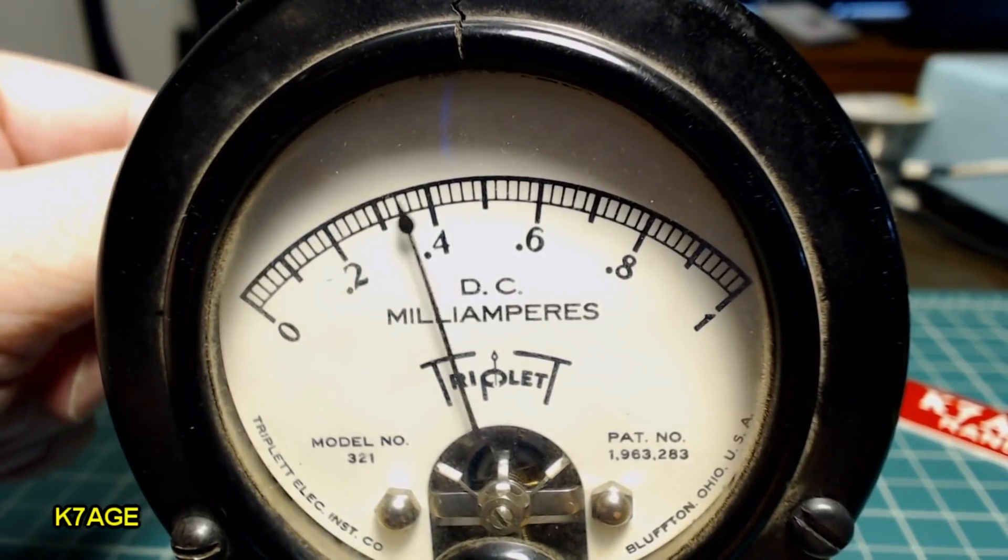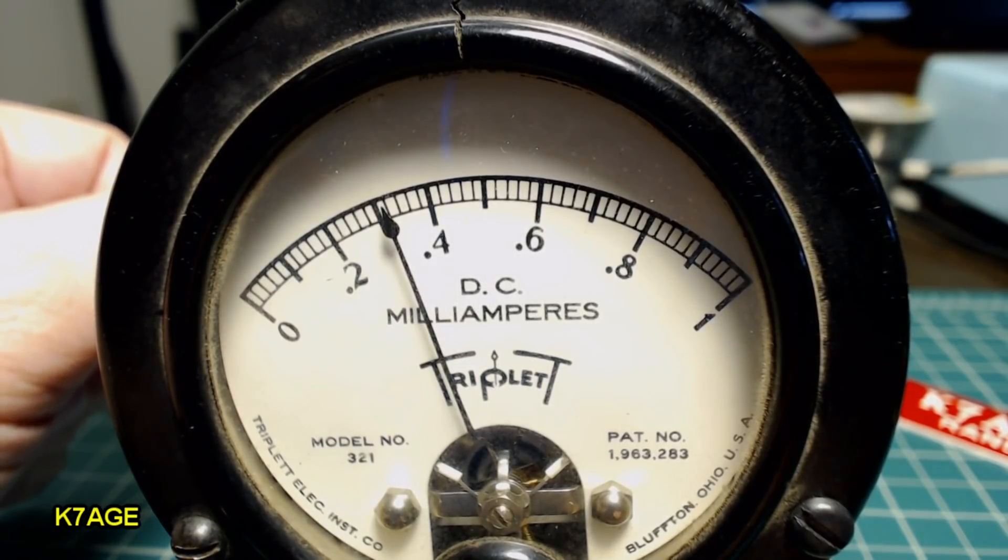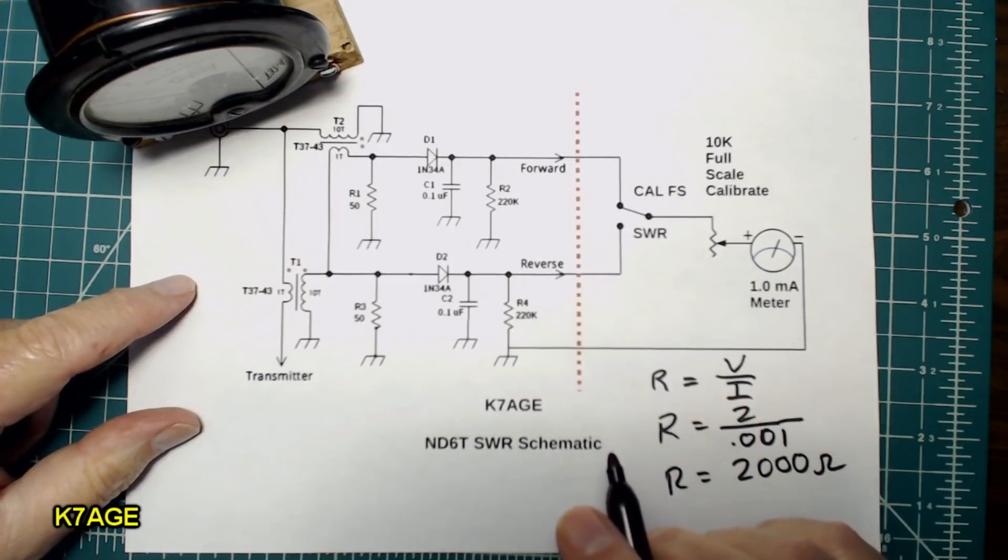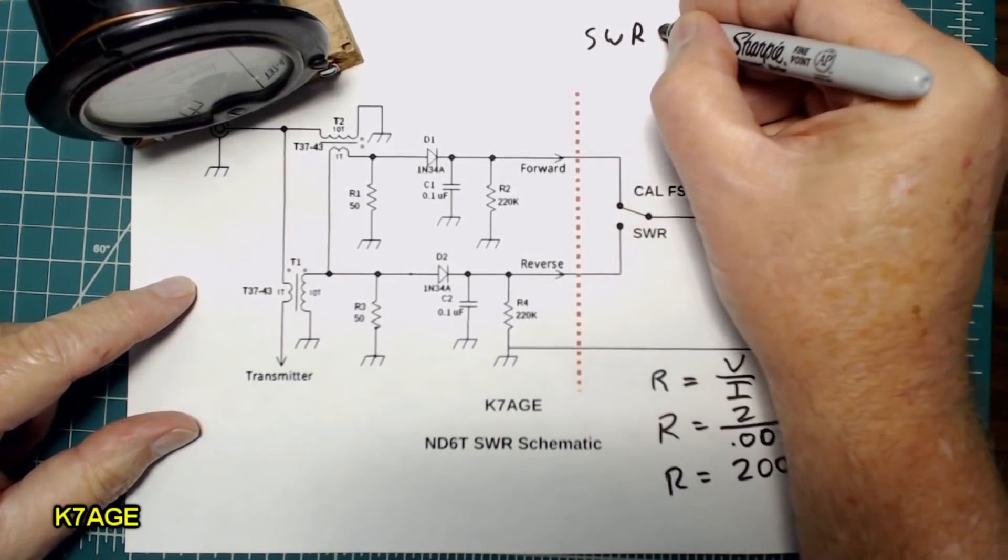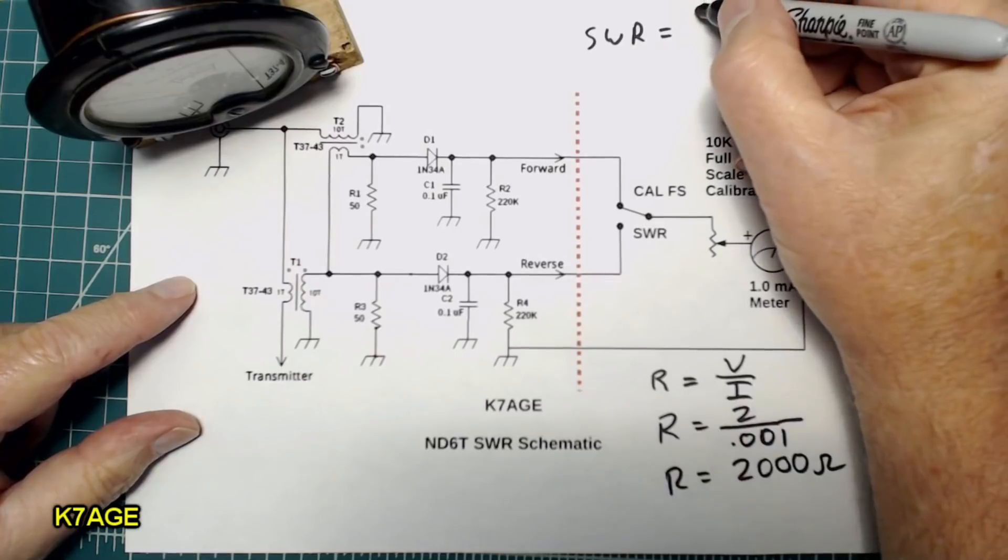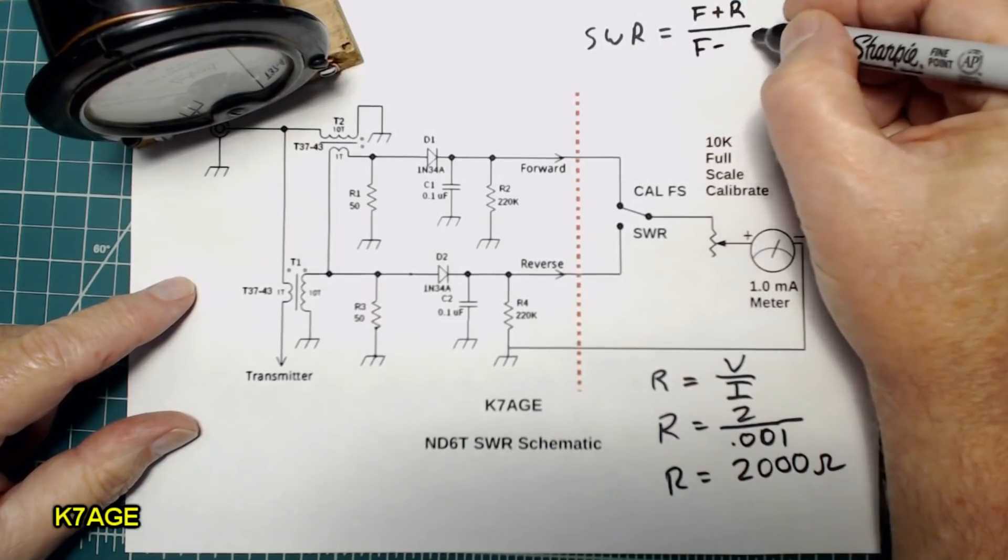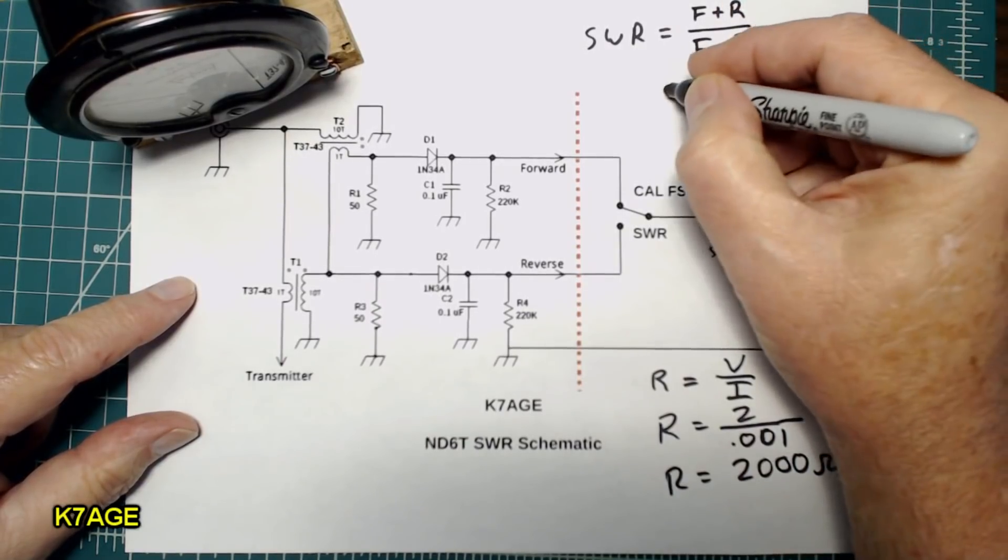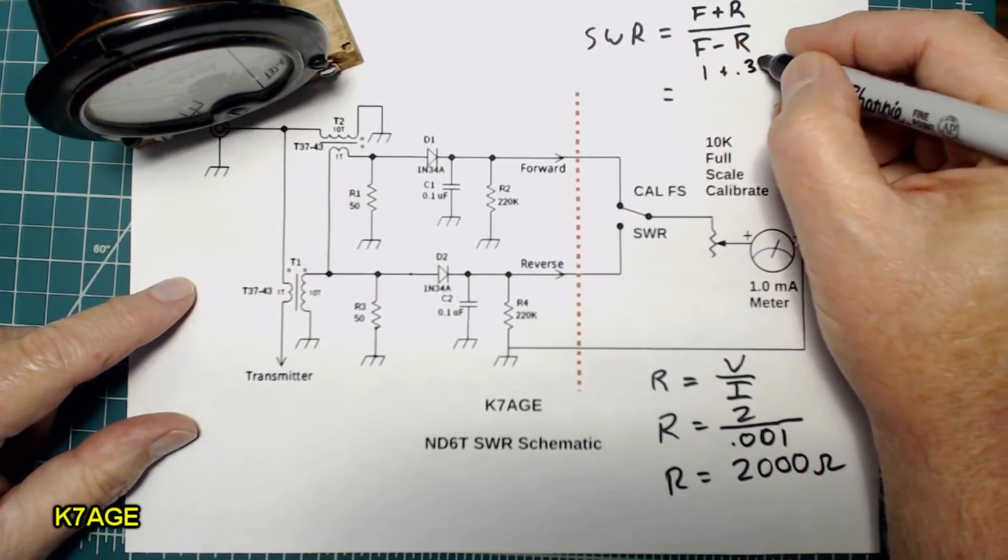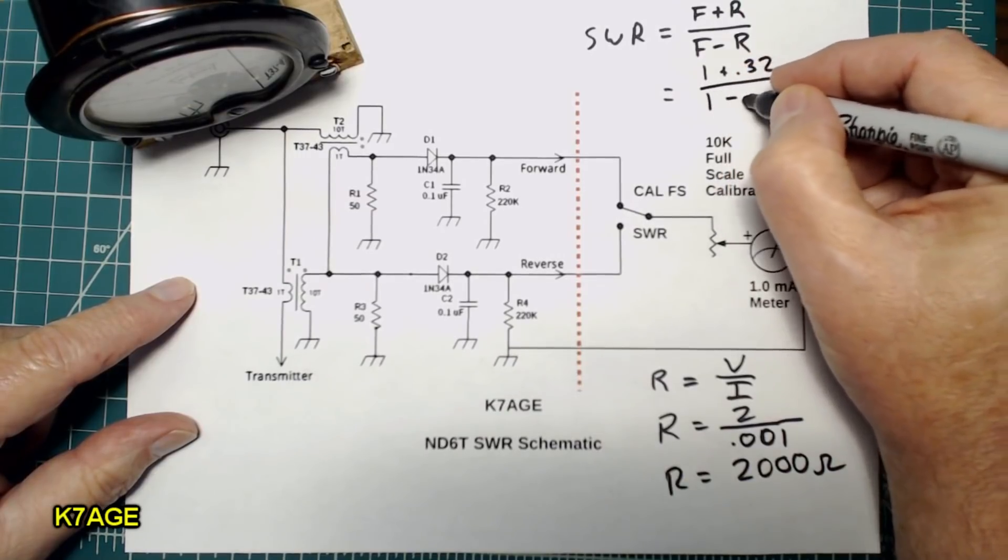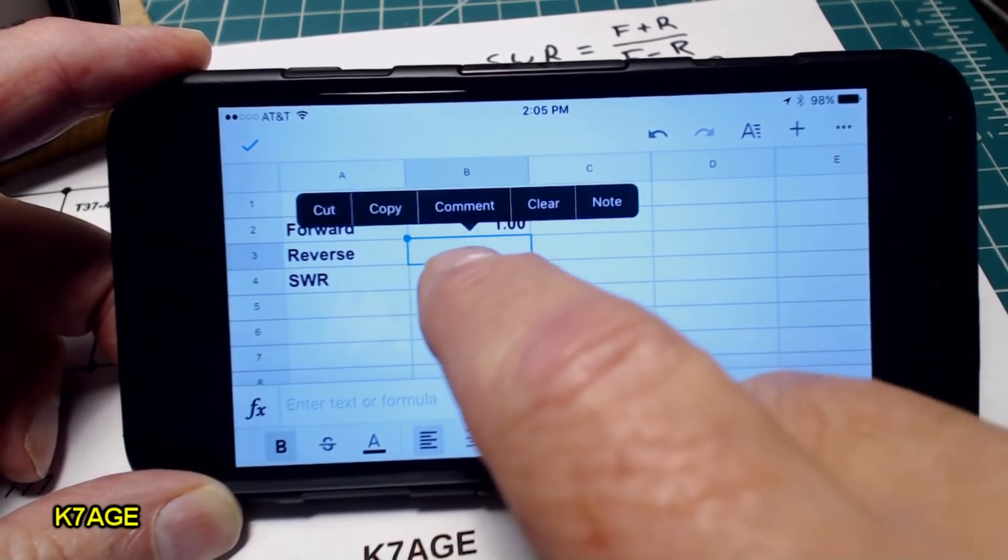Change the switch to reverse and I measure 0.32. But what SWR is that? So to figure out the SWR we use the 2 meter readings that we measured. So SWR will be equal to the forward plus the reverse reading divided by the forward minus the reverse reading. So that's going to equal to 1 plus the 0.32 divided by 1 minus the 0.32.